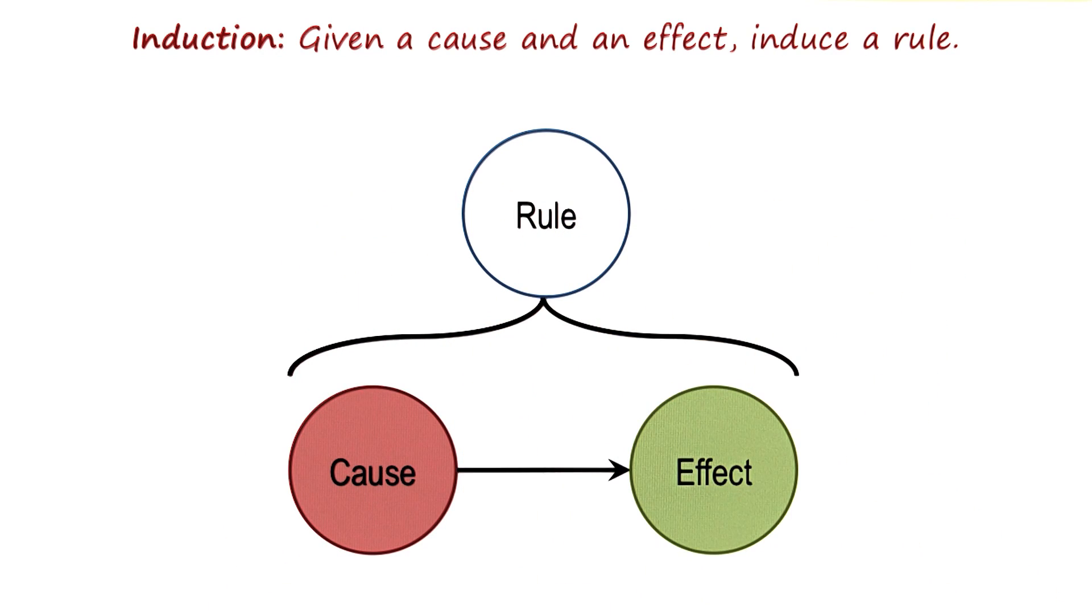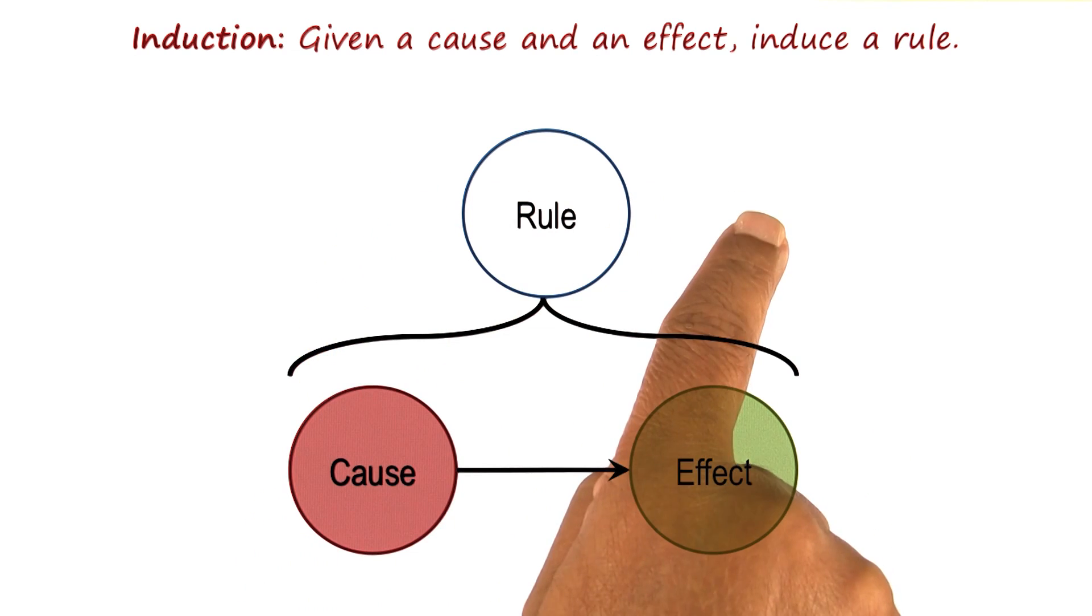Same thing with Bob and Joe. If we observe repeatedly that every time Joe arrives, Bob leaves, we can induce a rule that Bob must hate Joe. If every time a patient goes to a doctor with flu and the patient has fever, then we can induce a rule, if flu, then fever.